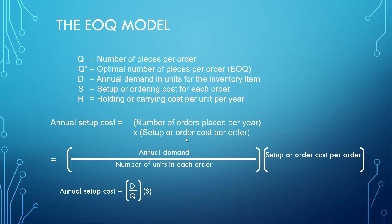Defining the variables: Q is the number of pieces per order, Q* is the optimal number of pieces per order, D is the annual demand in units, S is the setup or ordering cost for each order, and H is the holding or carrying cost per unit per year. The annual setup cost equals the number of orders placed per year multiplied by the setup cost per order — that is (D/Q) × S.